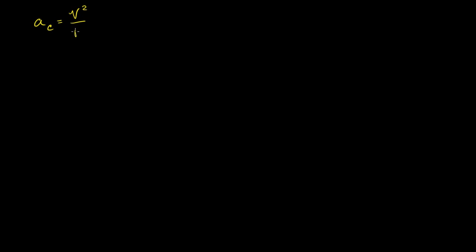What I want to do in this video is a calculus proof of the famous centripetal acceleration formula. The magnitude of centripetal acceleration — the actual direction will change, always pointing inwards — is equal to the magnitude of the velocity squared divided by the radius. This is a scalar formula, talking about the magnitude of the acceleration and the magnitude of the velocity. These are all scalar quantities.